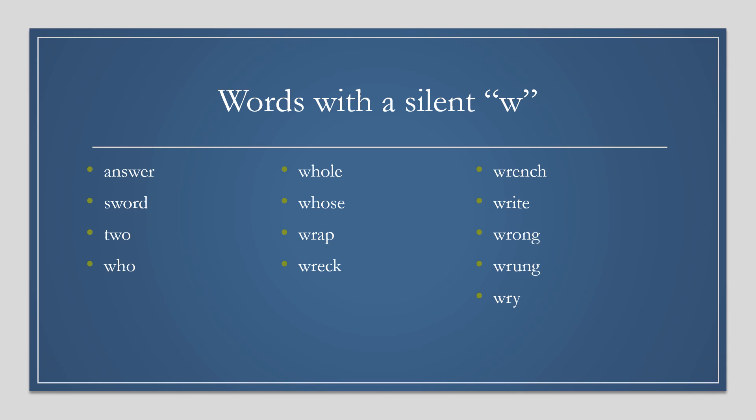Words with a silent W: sword, two, who, whole, whose, wrap, wreck, wrench, right, wrong, wrung, wry.